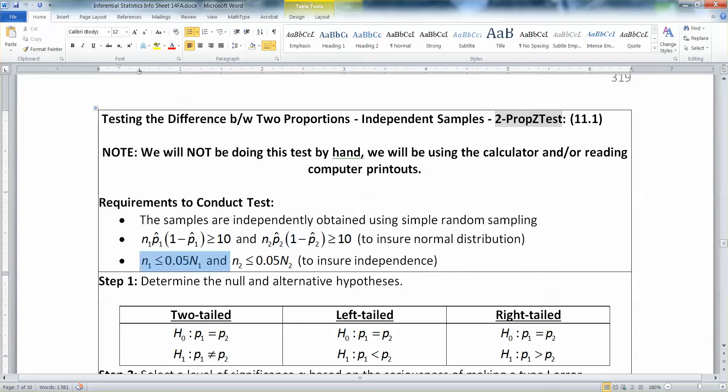Then you need n1 to be less than 5% of the capital N, the population size, and n2 to be less than 5% of the population size for group 2 in order to ensure independence. So if you have those three things, then you can construct a confidence interval or conduct a hypothesis test.